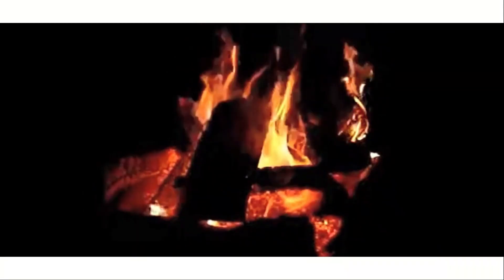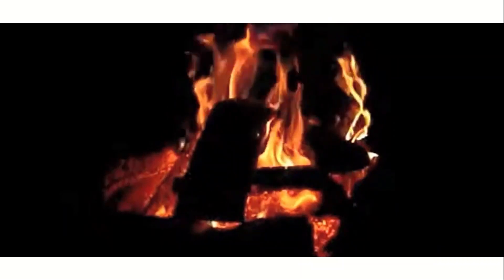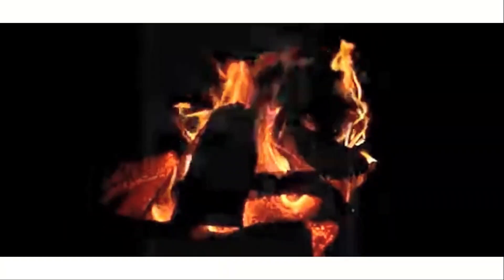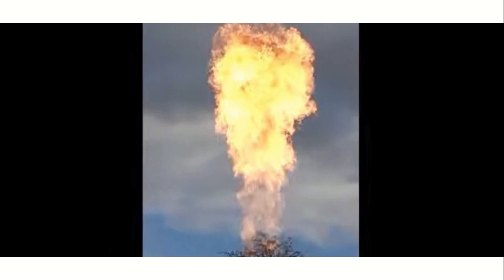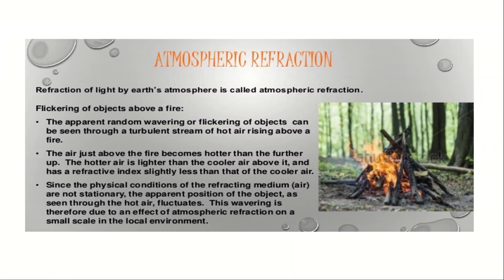The twinkling of stars is a similar phenomenon on a much larger scale. For example, an object on the other side of a fire looks like it is fluctuating due to atmospheric refraction. Similarly, a vehicle coming from far away on a mid-hot summer day appears to be fluctuating because of hot air on the road. Refraction of light by the Earth's atmosphere is called atmospheric refraction, and flickering of objects above a fire is one basic example of this.